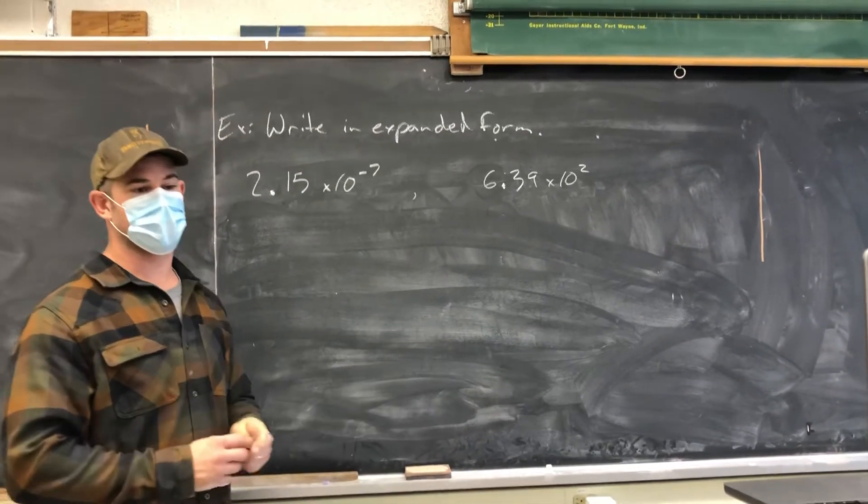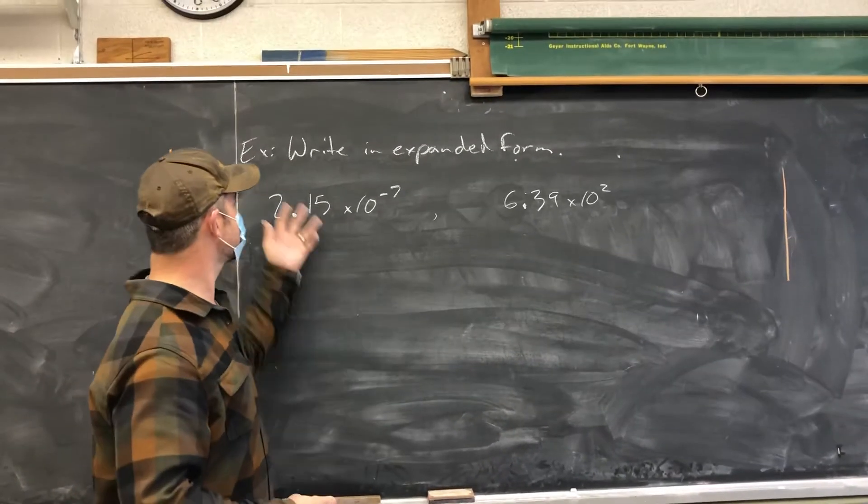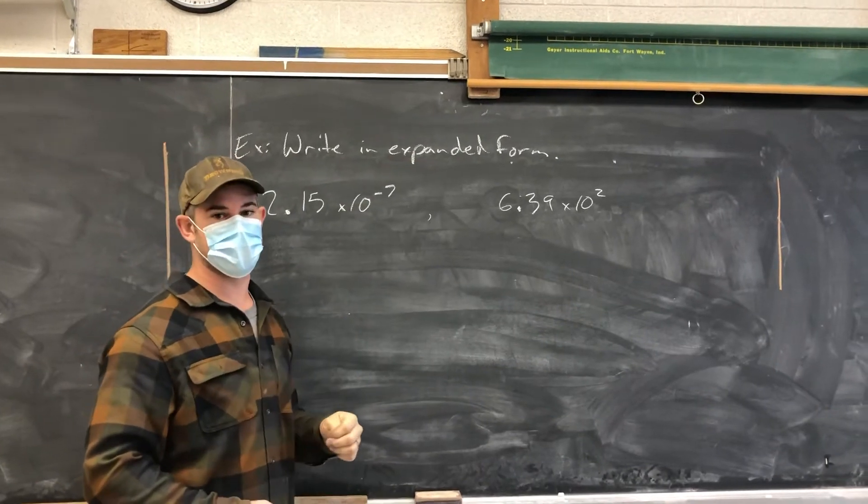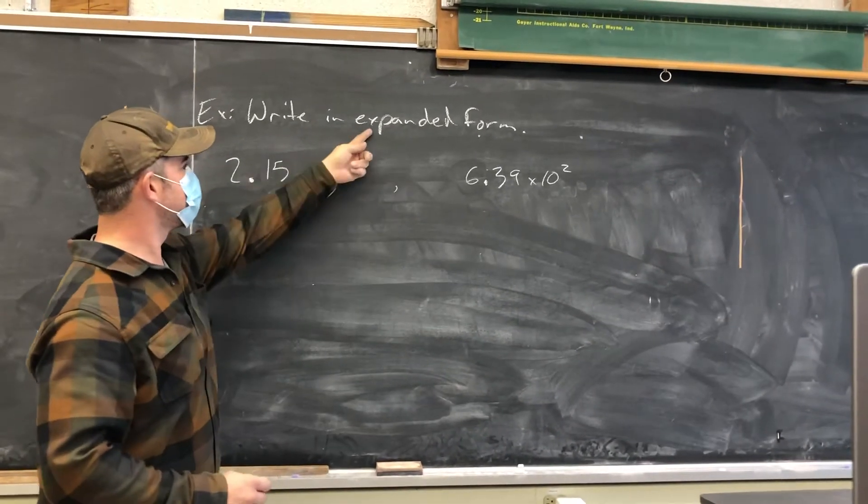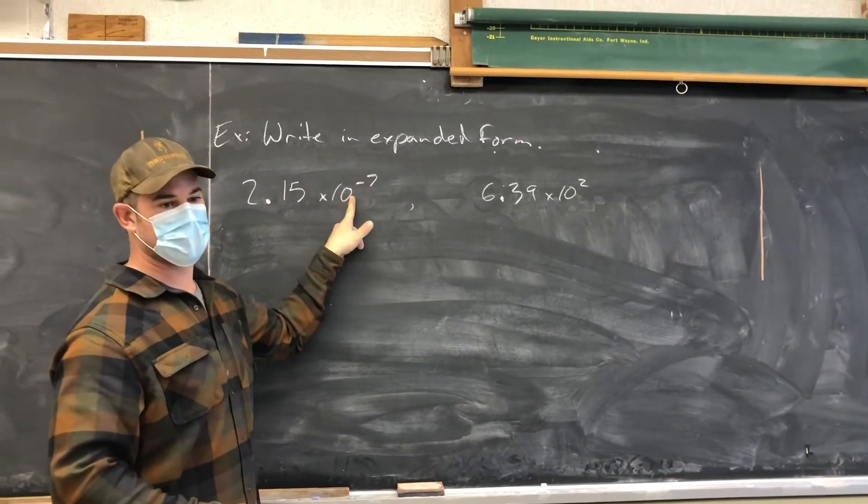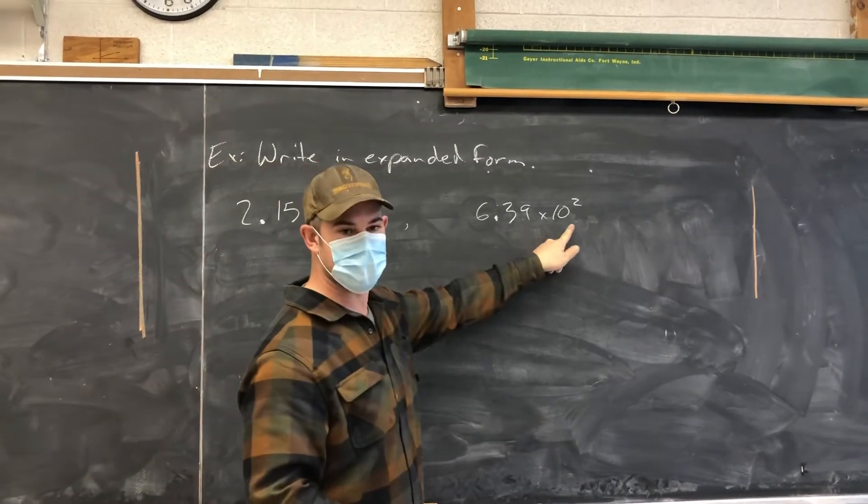All right, so in this video we're going to take a look at a scientific notation question. We have to write some things in expanded form. Just remember that expanded form means we're going to get rid of the multiplying by 10 portion or the magnitude portion of each of these terms.